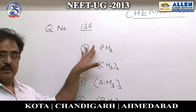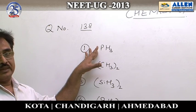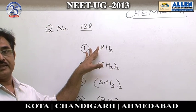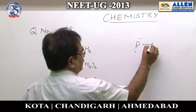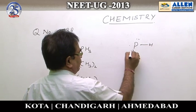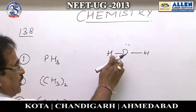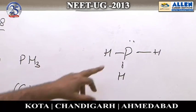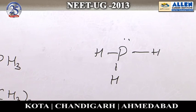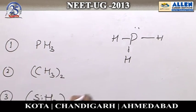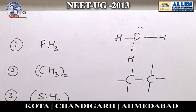In PS3, phosphorus is the central atom and has 8 electrons in its valence shell — the octet is complete. The structure of PS3 is shown here. In this molecule: 2+2=4, 4+2=6, 6+2=8 electrons are present in the valence shell of phosphorus. Therefore, the octet is complete.